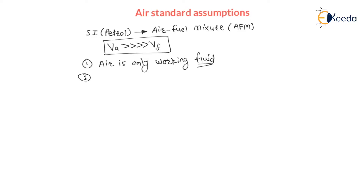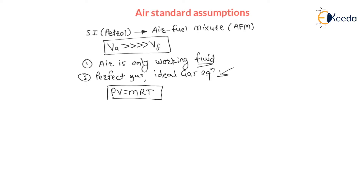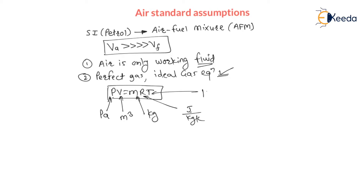The second assumption is: it is a perfect gas. We are assuming it is a perfect gas, hence ideal gas equations are valid. That is, PV = MRT, where P is absolute pressure in Pascal, V is volume in cubic metres, M is mass in kg, R is the gas constant in joule per kg·kelvin, and T is temperature in kelvin. Hence all ideal gas equations are valid.